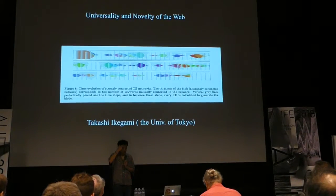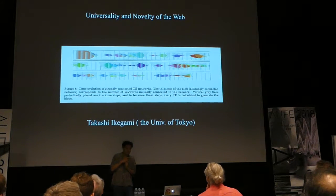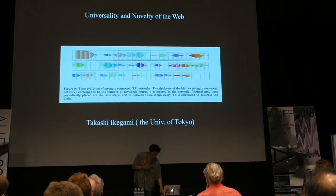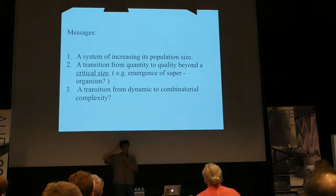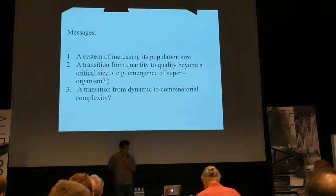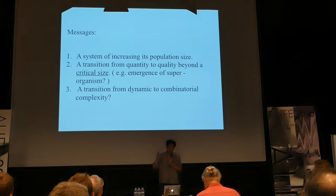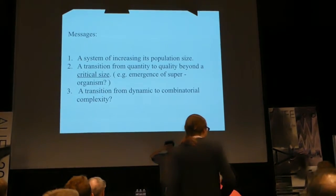I'm going to discuss what you can see as open-ended evolution in the web system and computer simulations. We'll have two examples. The first main message from my book is: we just increase the size of the population. Does increasing population size naturally lead to open-ended evolution? There is a transition from quantity to quality beyond a critical size — the question is whether such a critical size exists or not.